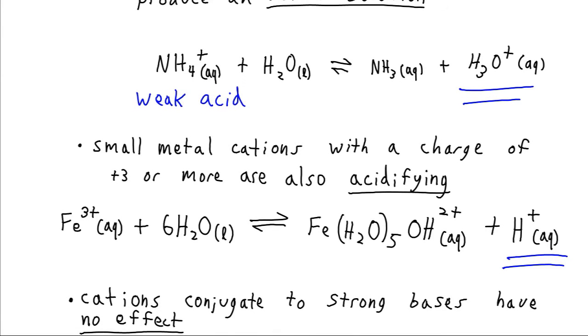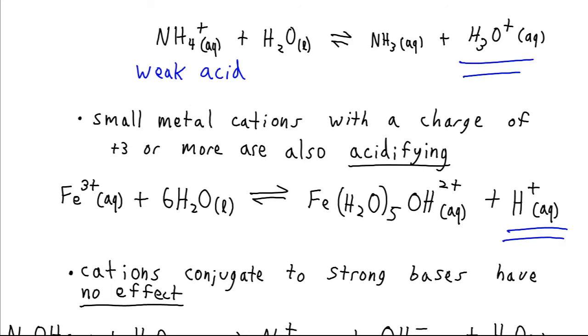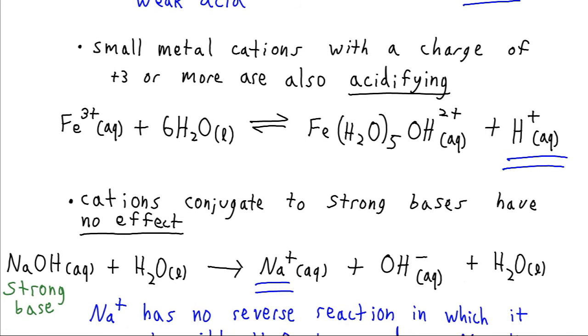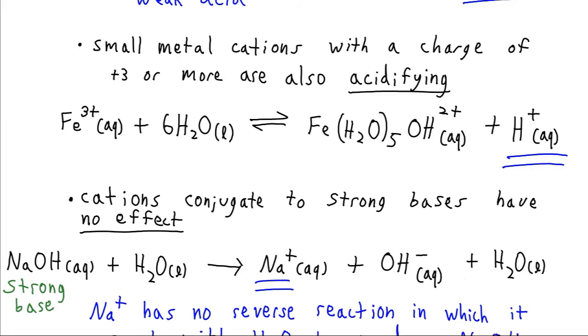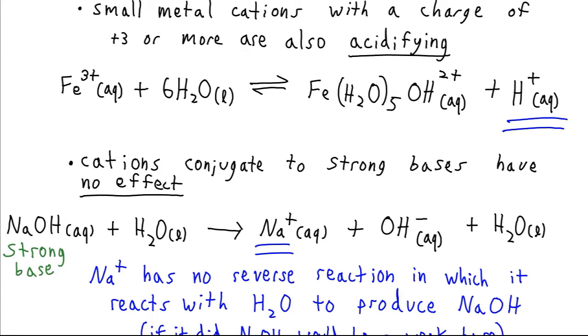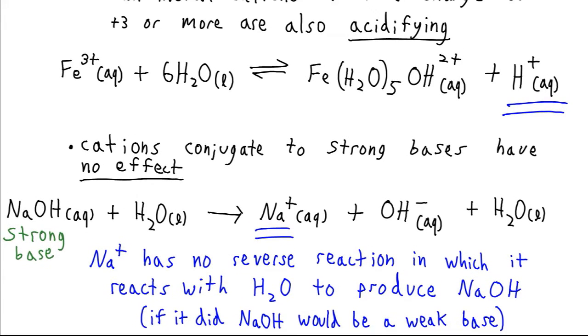We can also have an ion which doesn't have any effect, and that happens when we have an ion which is conjugate to one of our strong bases. So for instance, sodium hydroxide, if we put that in water, it will generate Na-plus and OH-minus. Now we know because this is a strong reaction that there's no reverse reaction. What that must mean is that the Na-plus does not react with water to produce NaOH. And that would mean that we had a weak base instead of a strong base. So by way of recognizing that these ions go together with our strong bases, then we can know they don't react with water and therefore are not going to affect the acidity of the solution.